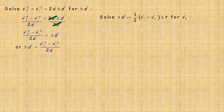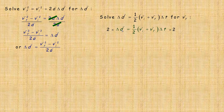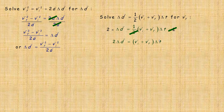Last one: delta d equals one half times (vi plus vf) times delta t, and we're asked to solve for the final velocity. I've got a half here, and very similar to the previous example, I want to get rid of the half because I want to isolate for final velocity. So let's multiply both sides by 2 — those 2s divide out — giving 2 delta d equals (vi plus vf) times delta t. Now I'm trying to solve for final velocity, so I expand the brackets: vi delta t plus vf times delta t.